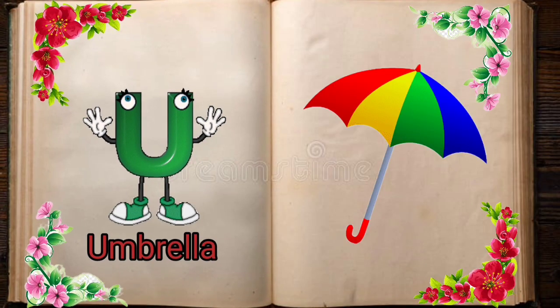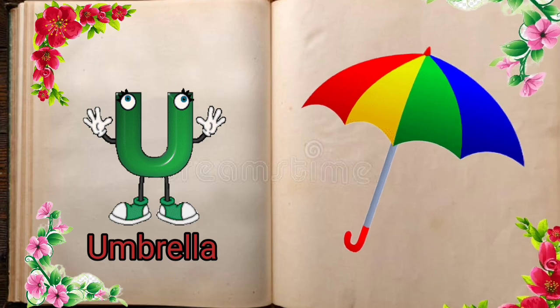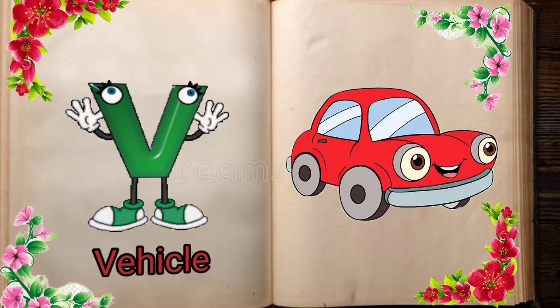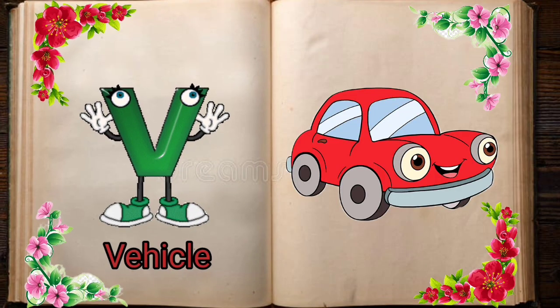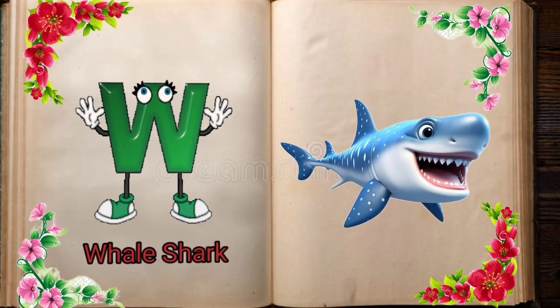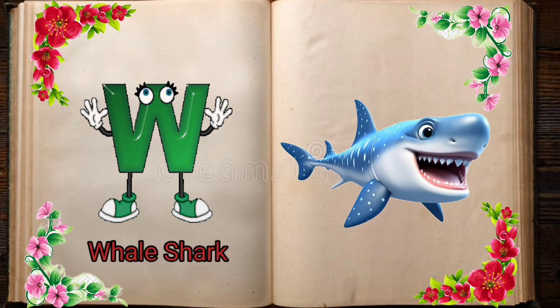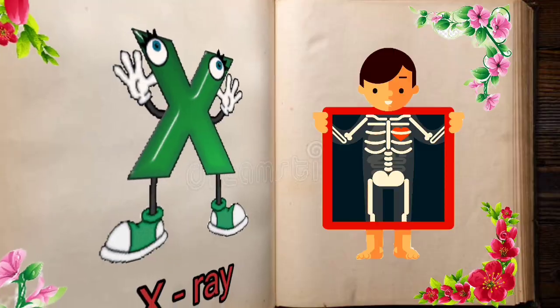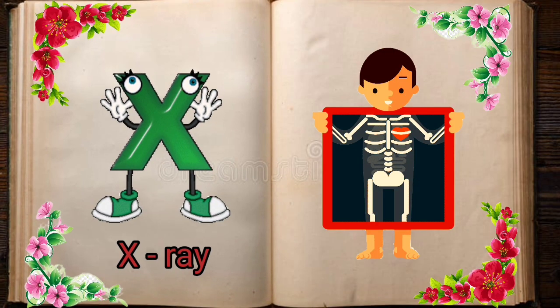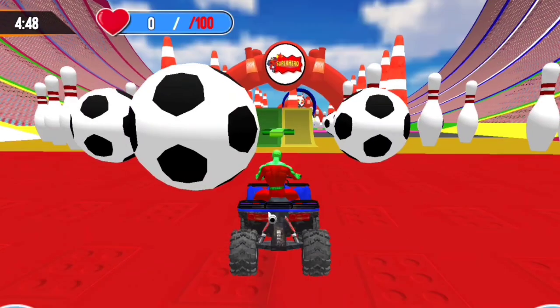U is for Umbrella, U-U-Umbrella. V is for Violin, V-V-Violin. W is for Watch, W-W-Watch. X is for Xylophone, X-X-Xylophone.